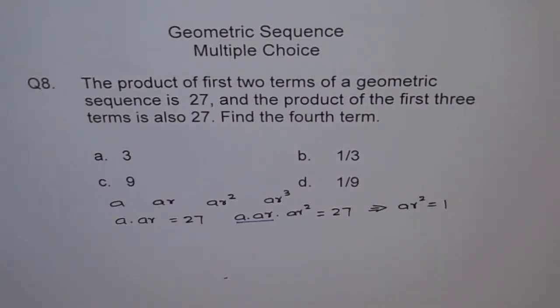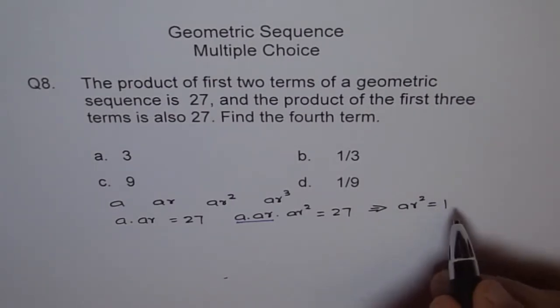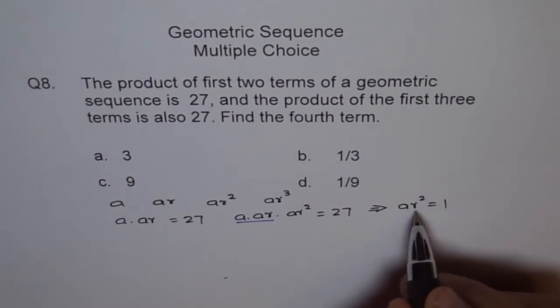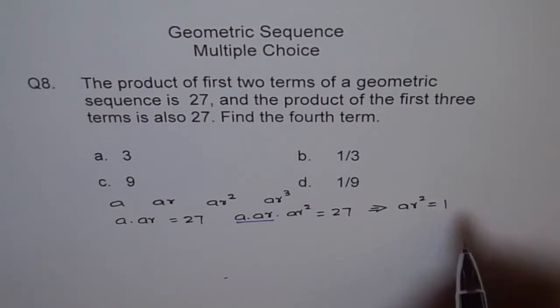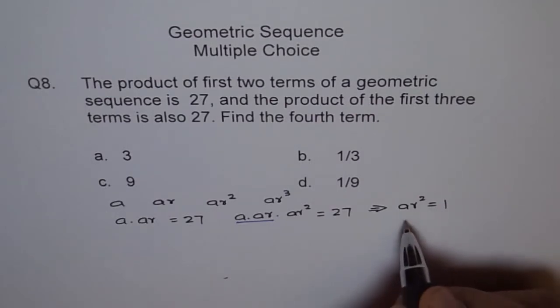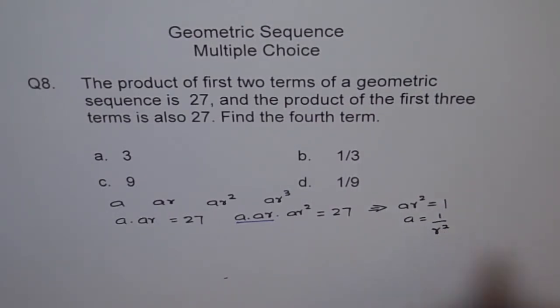Now from this relation we can say what a is. We say if ar squared equals 1, then a equals 1 over r squared. Now we know that a is related to r as 1 over r squared.